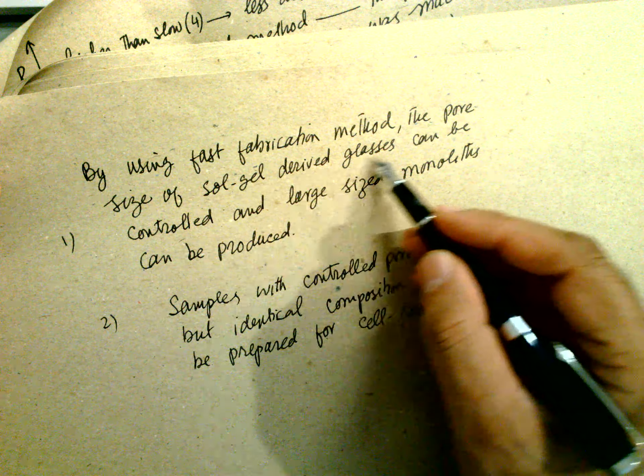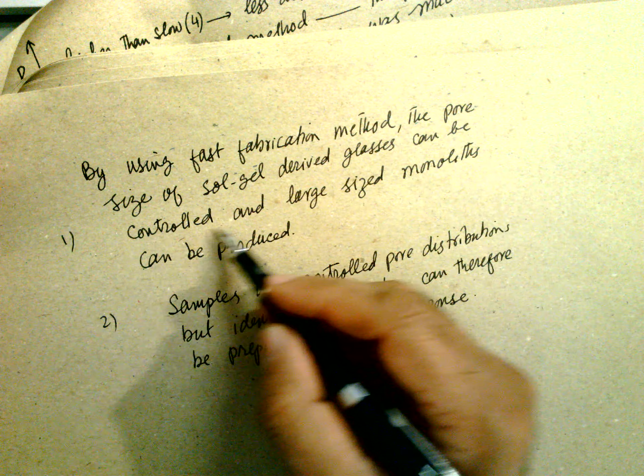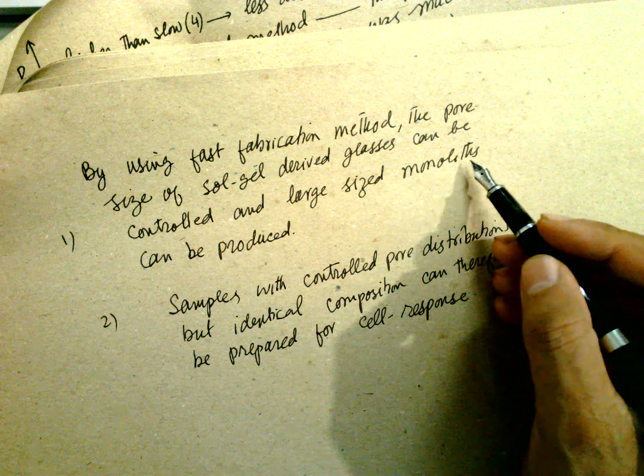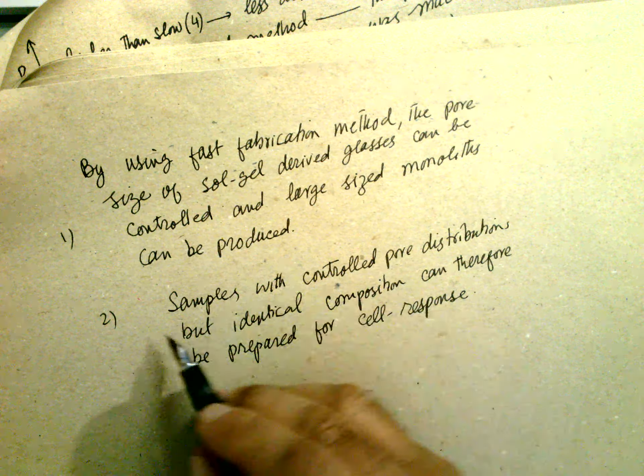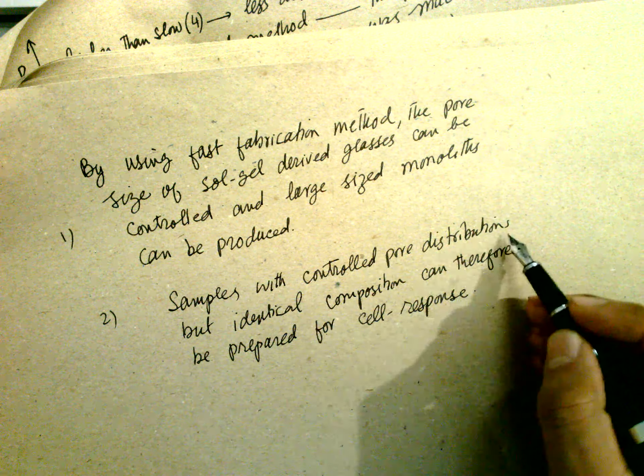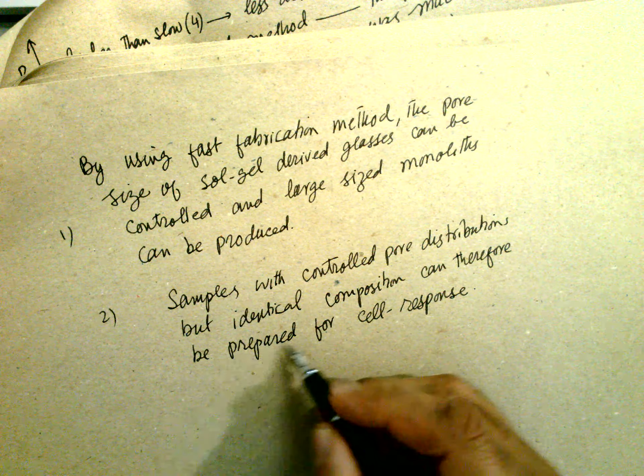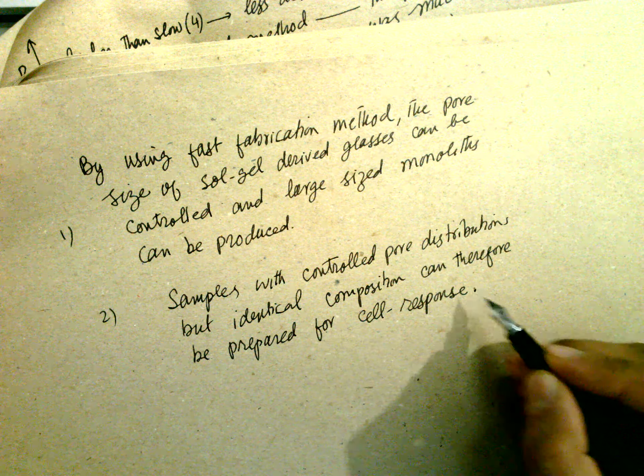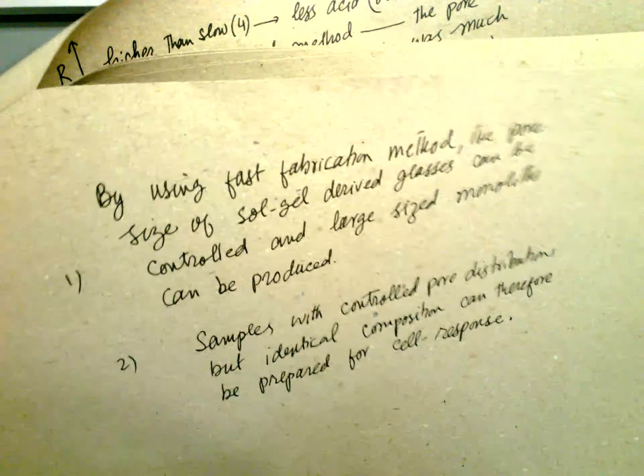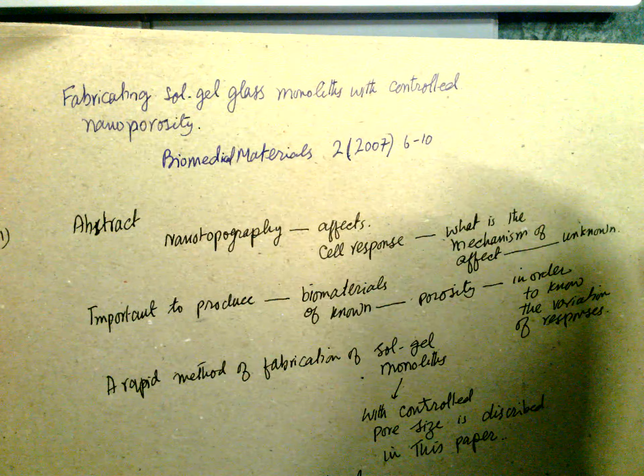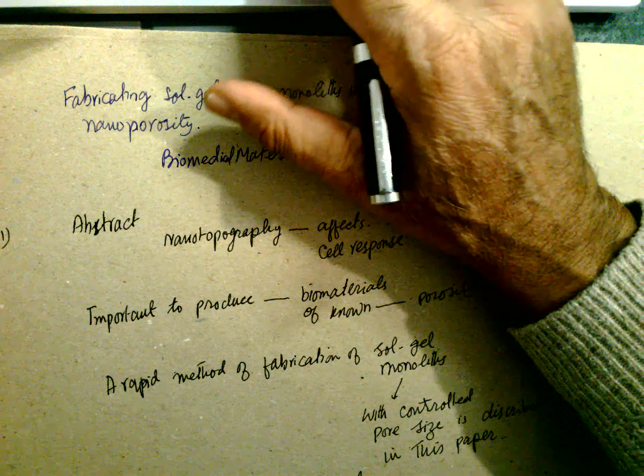By using faster fabrication method, the pore size of sol-gel derived glasses can be controlled, and large size monoliths can be produced. Samples with controlled pore distribution but identical composition can be prepared for the cell response. This is useful work.